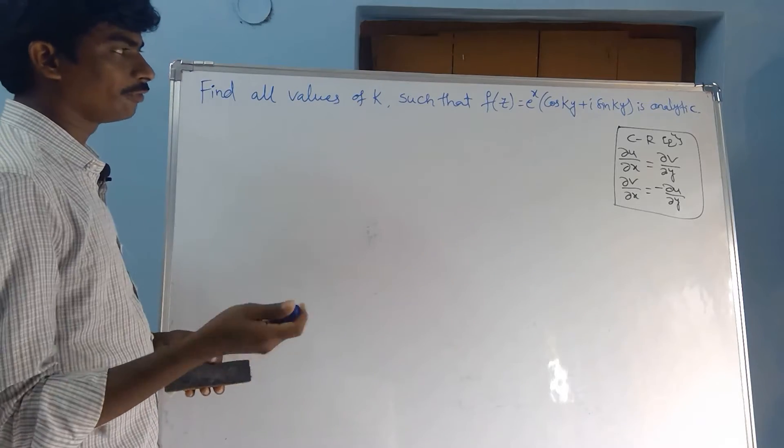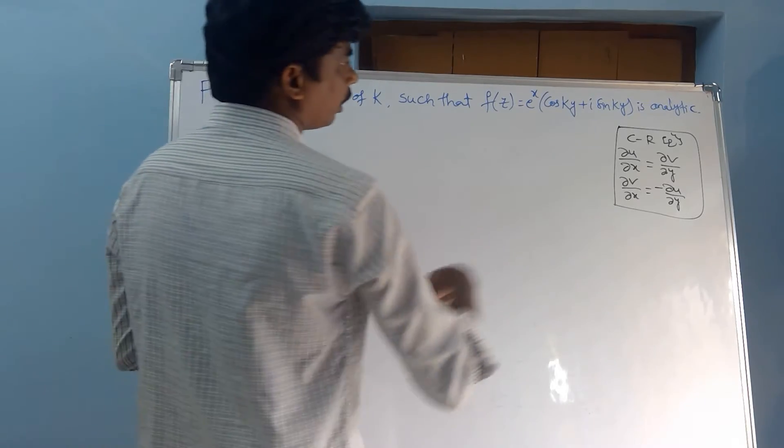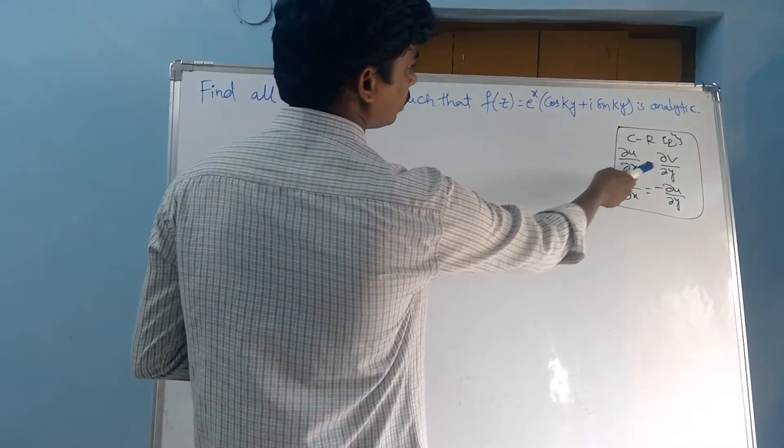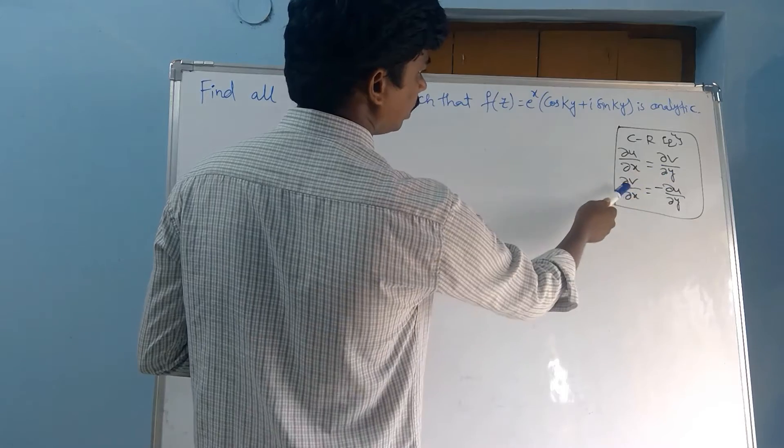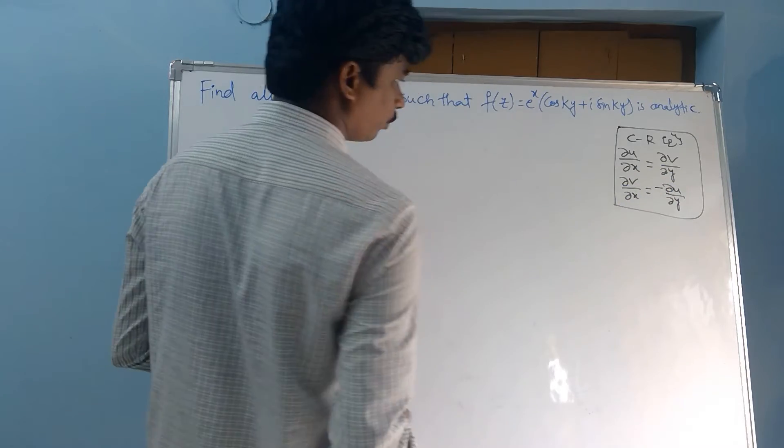First, do you know the CR equations? What are they? ∂u/∂x = ∂v/∂y, and ∂v/∂x = −∂u/∂y.